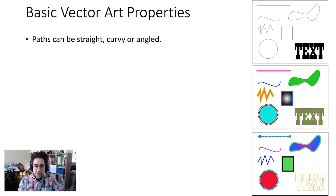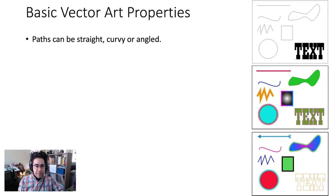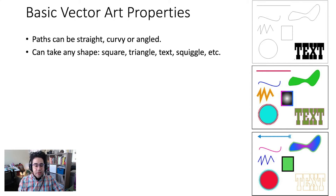The paths we use to draw vector art can be straight, curvy, or angled. And we can group them together to make literally any shape — a square, a triangle, text, a squiggle, a tiger, anything you can imagine.